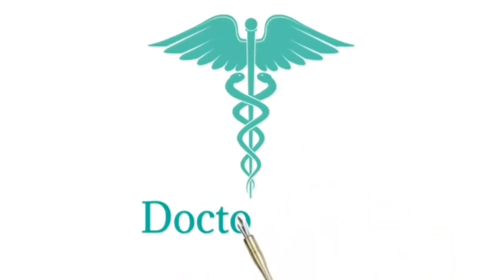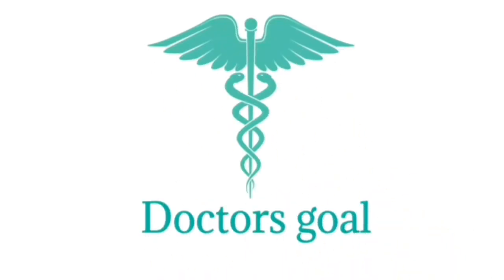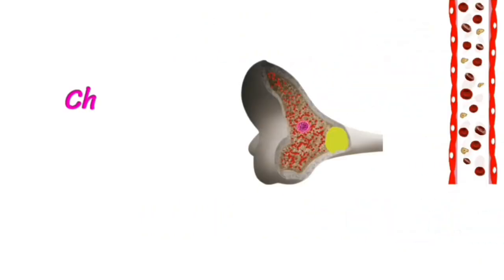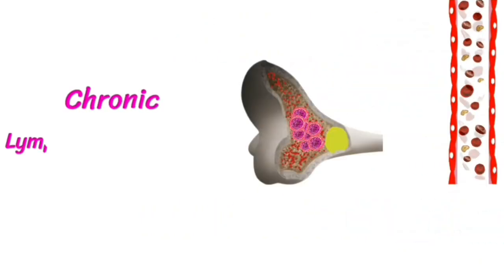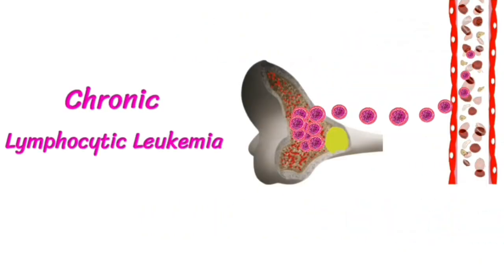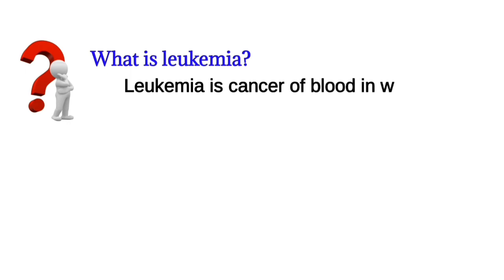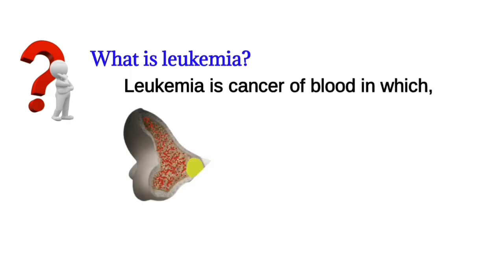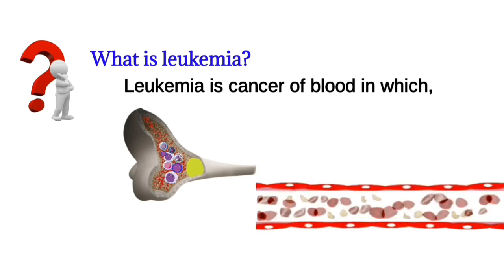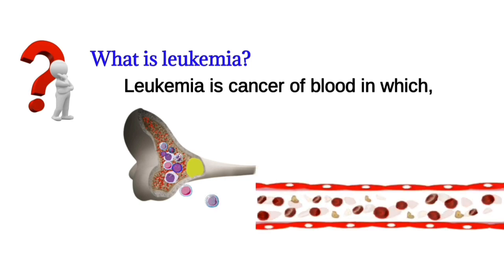Welcome to my channel Dr. Gold. Today our topic is chronic lymphocytic leukemia. First, a little discussion about leukemia. Leukemia is a cancer of blood and white blood cells, characterized by rapid production of abnormal blood cells.